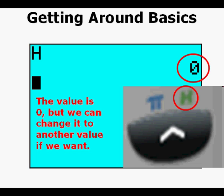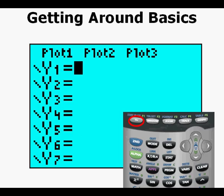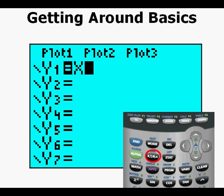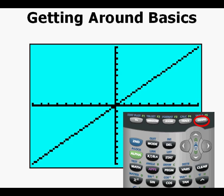We go to the function editor, sometimes called the y equals view by pressing the key at the upper left of the keypad. Here in the function editor, we can enter up to ten functions. To enter the variable x in the calculator, we find it here at the upper left next to the alpha key. And to graph the function y equals x that we entered, we press the graph key at the upper right of the keypad.